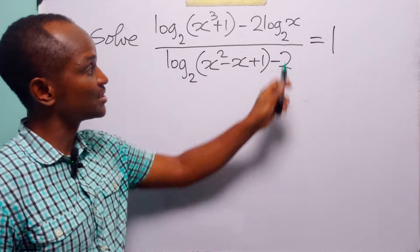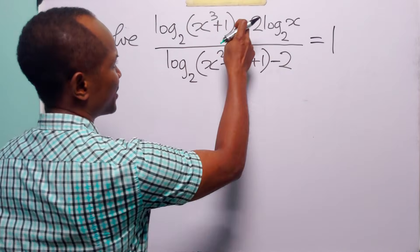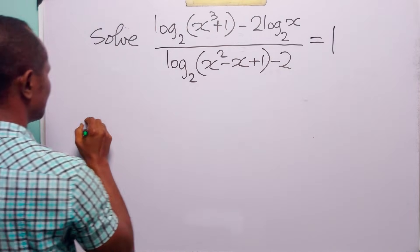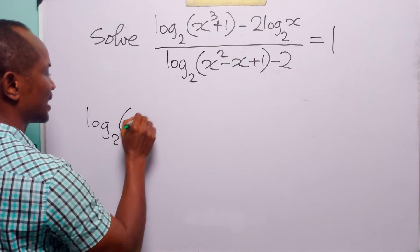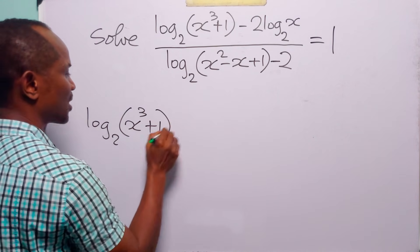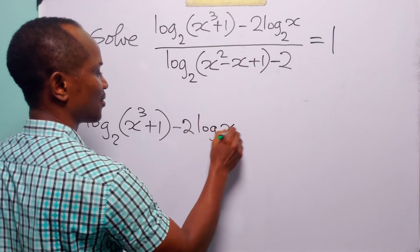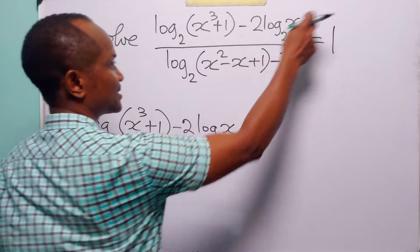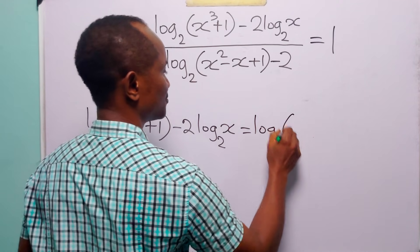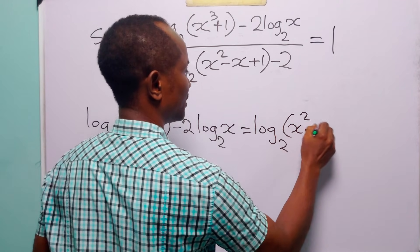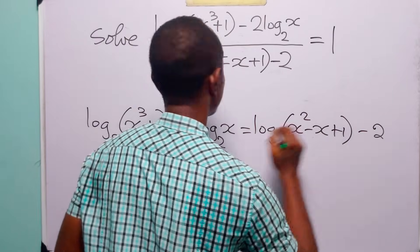To do this we need to cross multiply. When we cross multiply we have that log to base 2 of x cubed plus 1 minus 2 times log to base 2 of x is equal to log to base 2 of x squared minus x plus 1 minus 2.